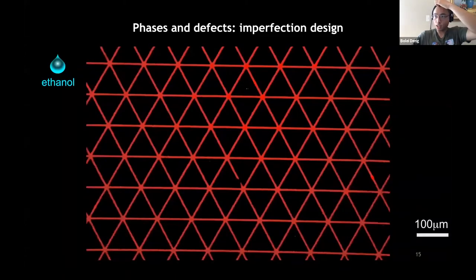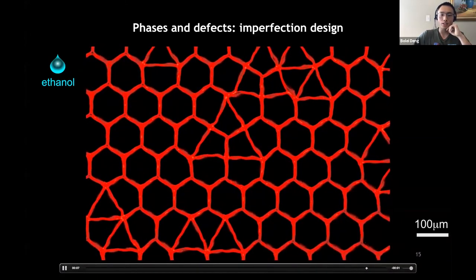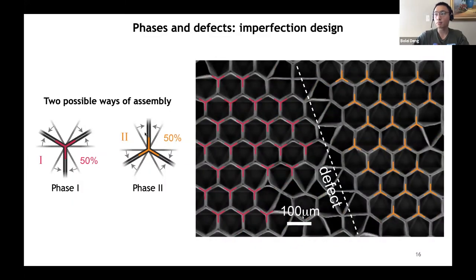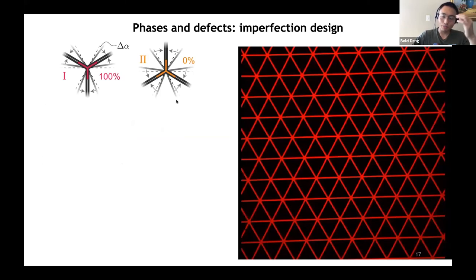Going back to the initial transformation of the triangular lattice: while we have focused on a small area, as we zoom out we find that defects do exist. These defects originate from an interesting bifurcation behavior of node formation. When a node of connectivity 6 transforms to connectivity 3, it has two ways of doing so: it can form a Y-shape (phase 1) or a reversed Y-shape (phase 2). When these two phases coexist, you get a phase boundary — the defect. Defects can sometimes be bad, and it is simple to avoid them by perturbing the initial node slightly so the structure always favors phase 1 over phase 2.